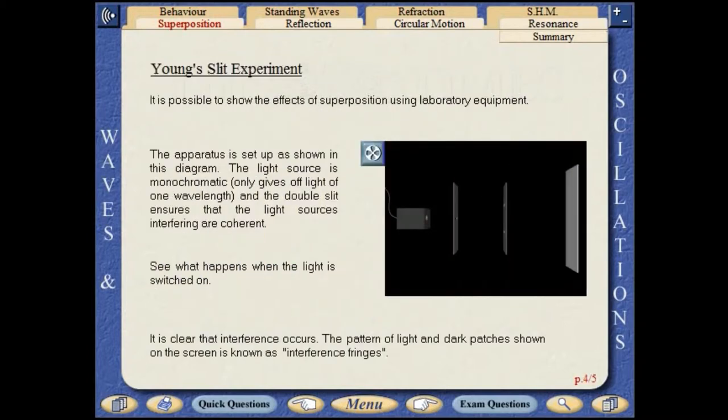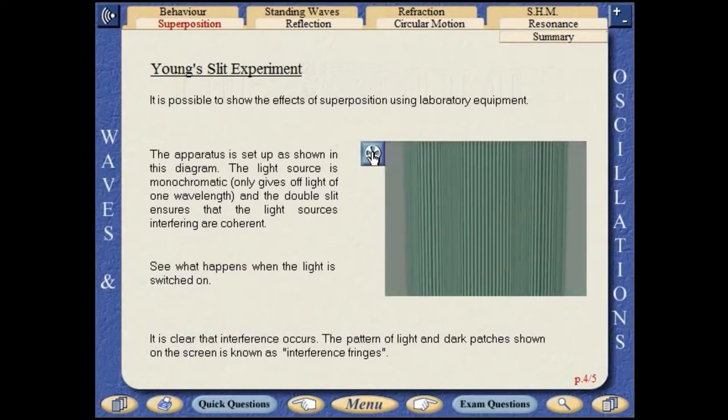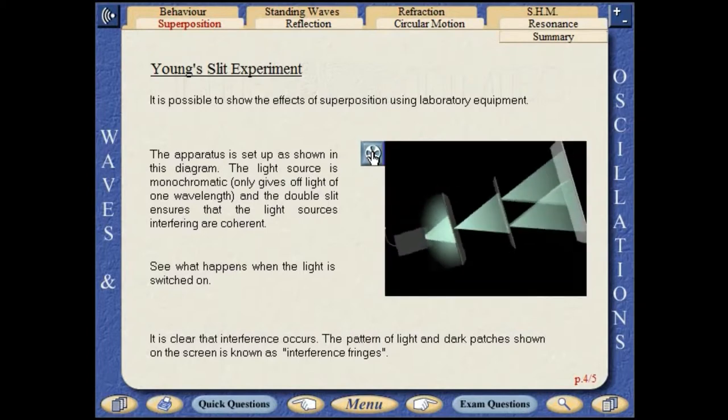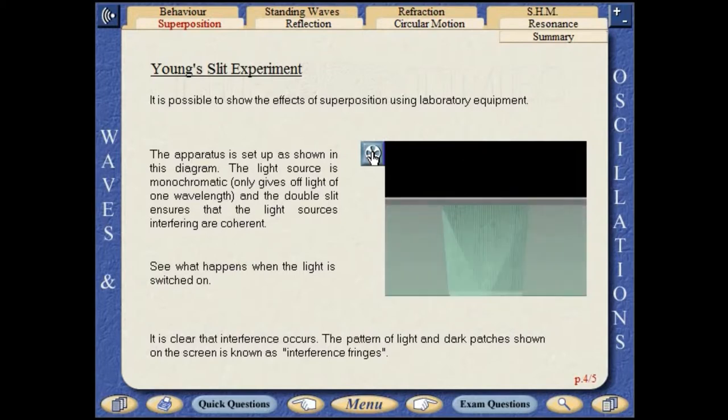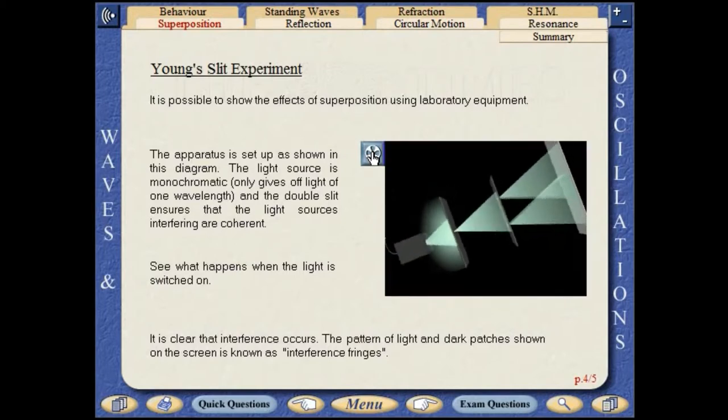It is possible to show the effects of superposition using laboratory equipment. The apparatus is set up as shown in this diagram. The light source is monochromatic, and the double slit ensures that the light sources interfering are coherent. It is clear that interference occurs. The pattern of light and dark patches shown on the screen is known as an interference fringe.